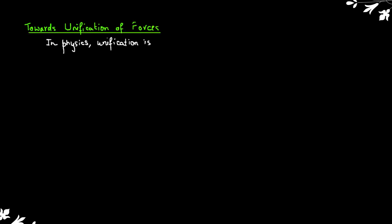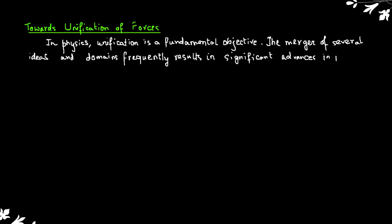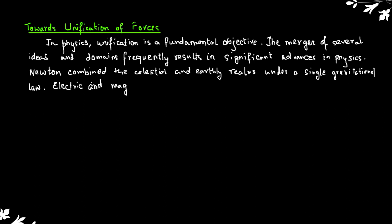In physics, unification is a fundamental objective. The merger of several ideas and domains frequently results in significant advances in physics. Newton combined the celestial and earthly realms under a single gravitational law. Electric and magnetic phenomena are typically intertwined, according to experimental findings by Orsted and Faraday.